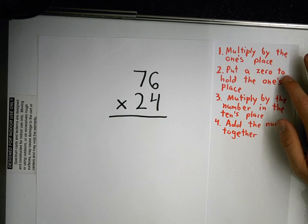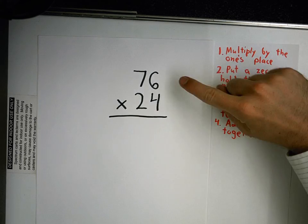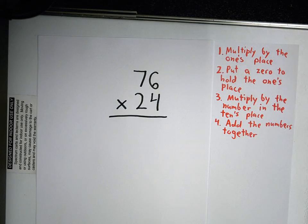Now, I kept our rules over here for how we multiply a two-digit number times a two-digit number. This one is a little harder because when we multiply the numbers, some of them are going to be more than 10.